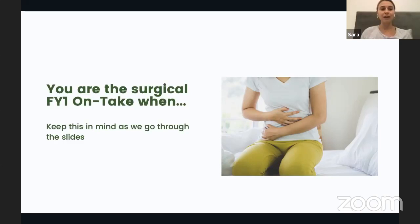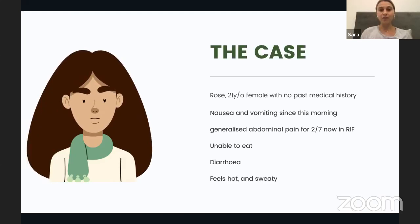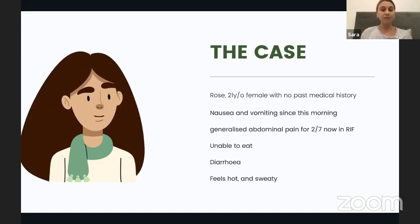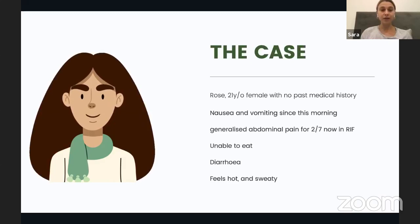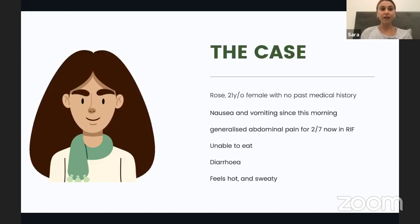For the case today, bear in mind that you're going to be the surgical FY1 on take, and you're going to be clerking your patient. The patient who comes through the door is Rose, a 21-year-old female with no past medical history. She presents with nausea and vomiting which started this morning. She's unable to eat. The first symptom she noticed was generalised abdominal pain, which started two days ago and has now moved to the right iliac fossa. She also complains of some diarrhoea and feels hot and sweaty.